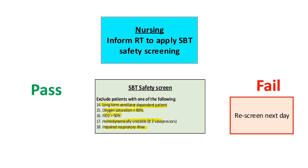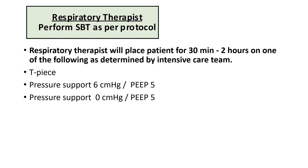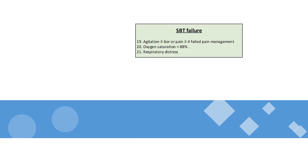If the patient passes and has no exclusion, I need to hold feeding. The respiratory therapist will then perform the SPT as per protocol. If the patient develops agitation with SAS of 6 or more, pain more than 4 that cannot be managed, saturation less than 88%, or respiratory distress, the patient fails the SPT.